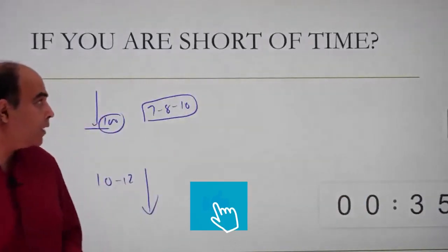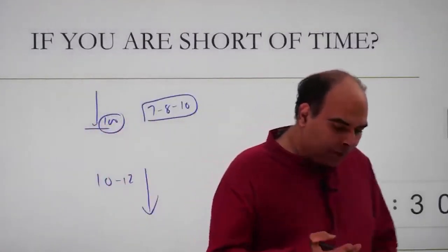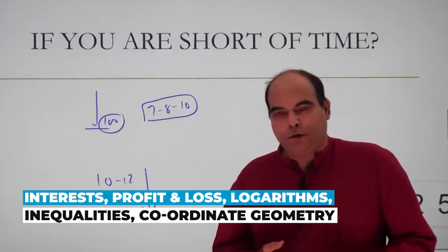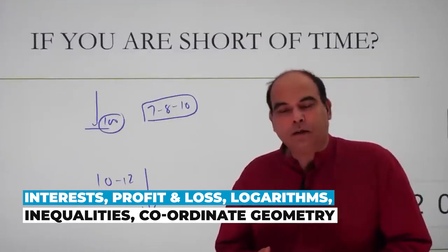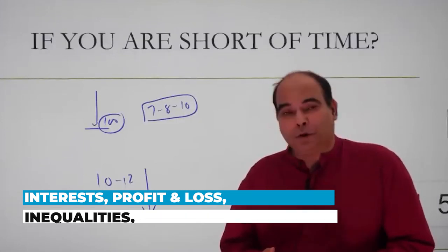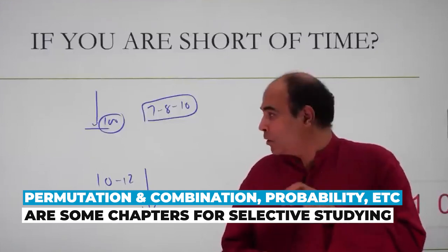Your options for selective studying include chapters like interest, profit and loss, logs. Part of what happened in 2018, then inequalities to a large extent, coordinate geometry. Definitely selective studying is possible there. And then your chapters like permutation, combination, probability, these chapters also give you an option to do a little bit of selective studying.